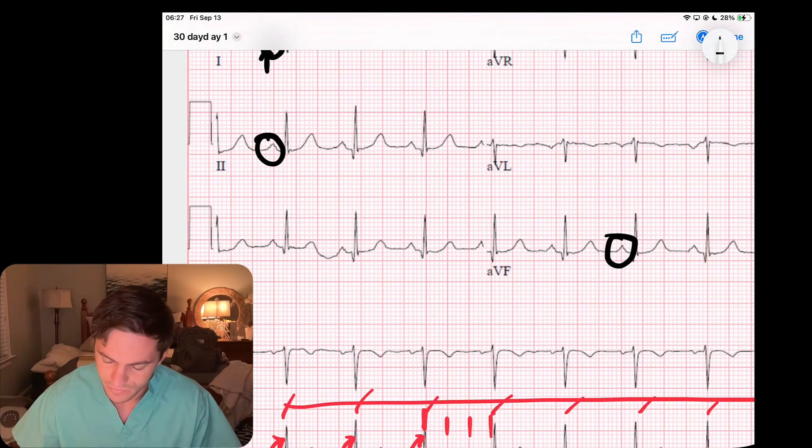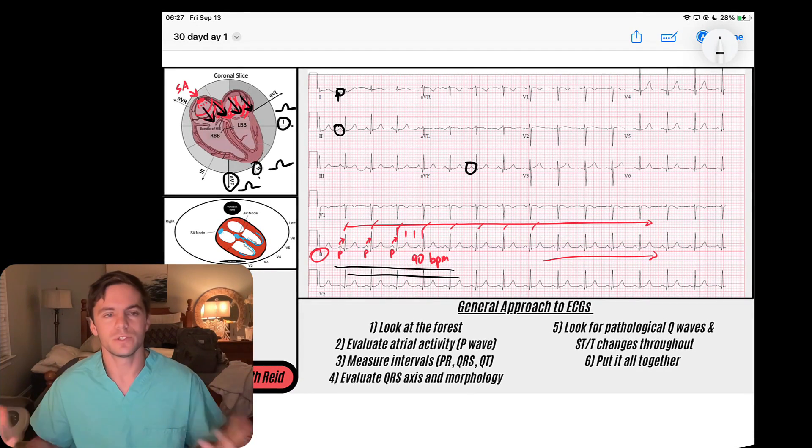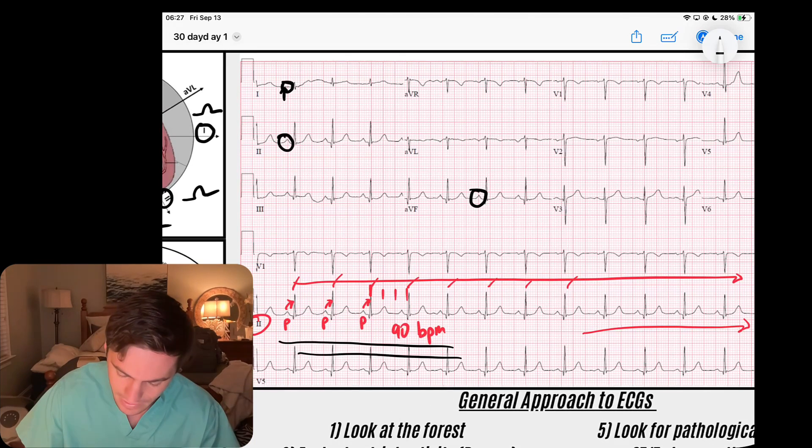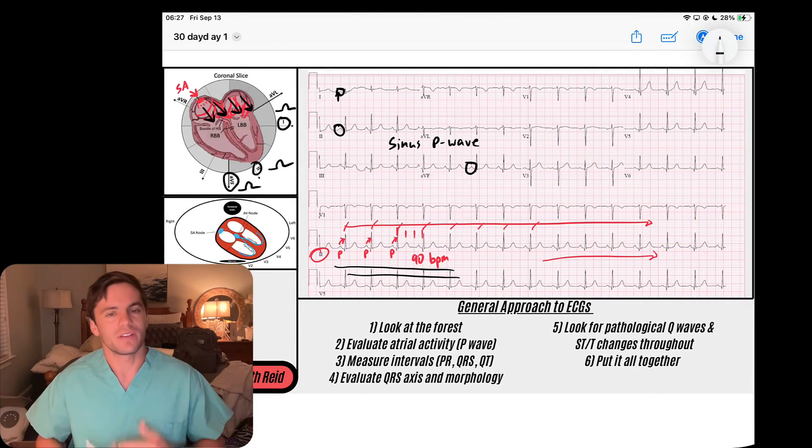In leads two and leads AVF, that tells me that my P wave is heading down to the left, which really tells me it's coming from the sinus node. That's how I can tell this is a sinus P wave.